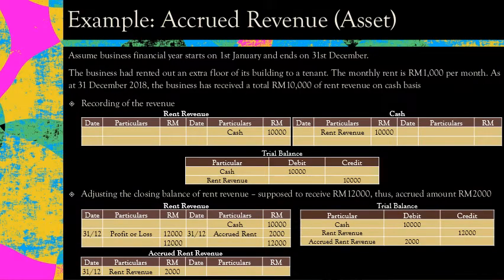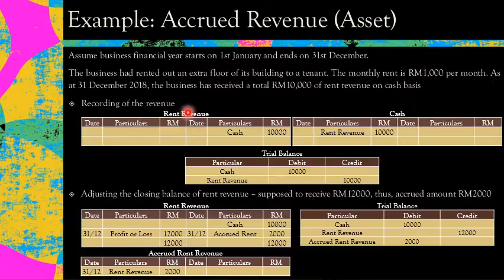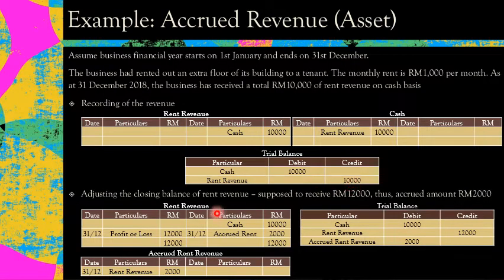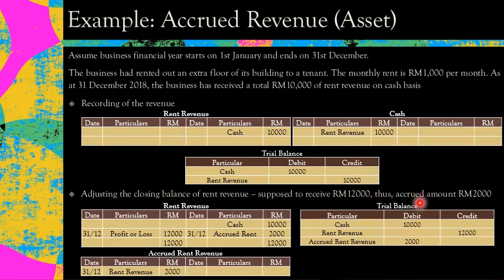For an example of accrued revenue: the business rented out an extra floor of its building to a tenant at a monthly rent of RM1,000 per month. As at 31 December 2018, the business received a total of RM10,000 of rent revenue on cash basis — recording debit cash, credit rent revenue. But your trial balance shows RM10,000, which is wrong because you're supposed to receive RM12,000 (RM1,000 × 12 months). So you have an accrued amount of RM2,000.